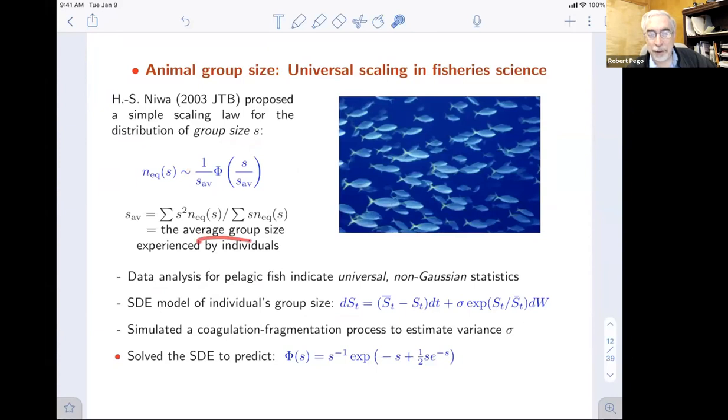He proposed a scaling law with respect to the average group size experienced by individuals. S is the size of a group, a school of fish, n is the number of schools of that size. So s n of s is the number of individuals in schools of size s. The first moment of that size distribution is what you scale by. There's a scaling profile phi, which he solved an Ito differential equation correctly to find in this form down here, involving a double exponential.